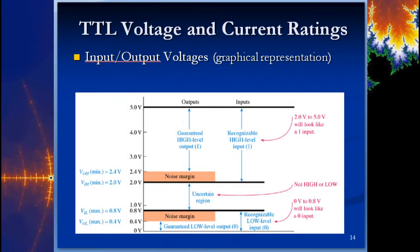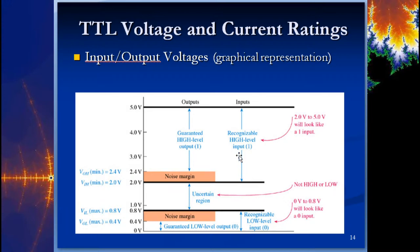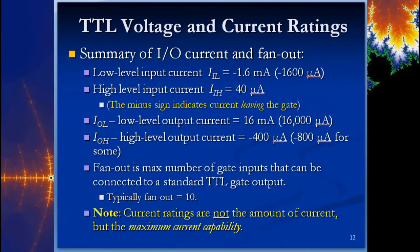Here's a graphical amplitude representation of inputs and outputs for a TTL chip. You can see that 2.4 volts is the minimum for a guaranteed high output. There's a noise margin region where the chip will still pull in a signal as a high even with a little noise. The recognizable high input range is really about 2 to 5 volts.